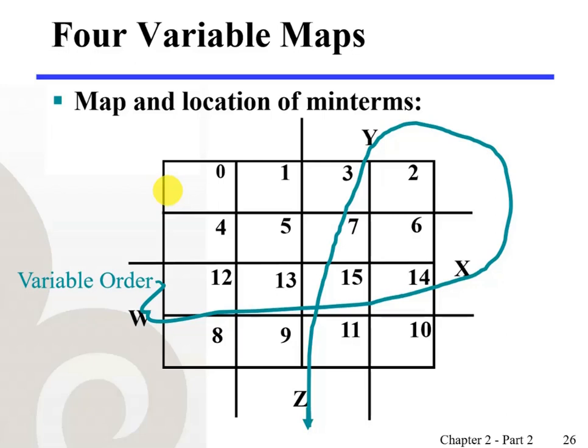So far, we have seen examples of two variable maps and three variable K-maps. How we can construct the four variable K-maps if we have a Boolean function of four variables? Let's take a look at the following example. First, the four variable K-map will have 16 cells, 16 squares, 2 to the power of 4.